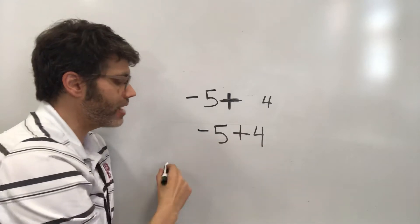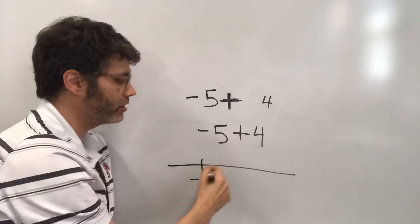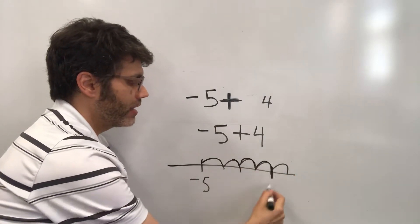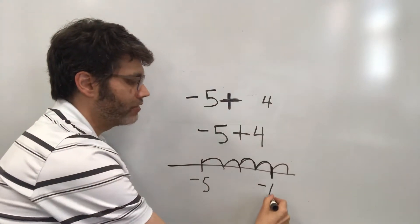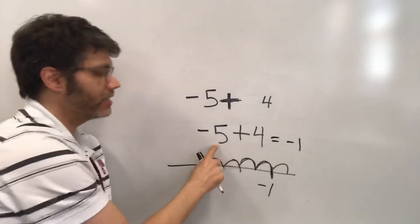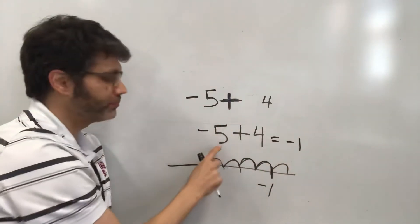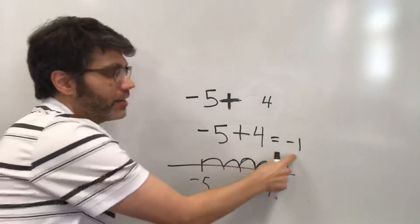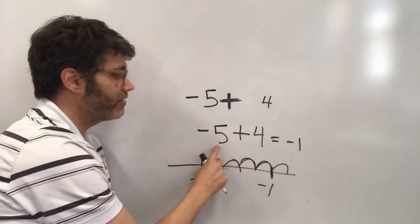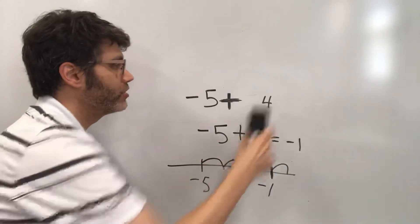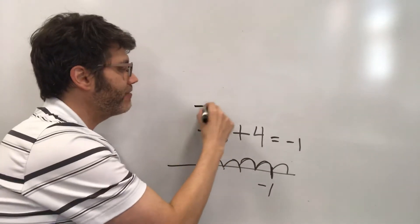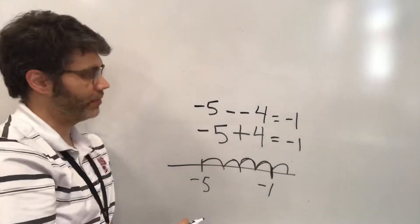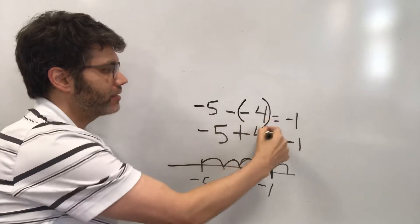Now you can use a number line: you're at negative 5 and you go to the right 4 — 1, 2, 3, 4 — winding up at negative 1. It's still negative because the magnitude of negative 5 is larger than positive 4, so positive 4 isn't enough to overtake it, but it makes it a lot less negative. So negative 5 plus 4 is negative 1, and therefore negative 5 minus negative 4 is also negative 1.